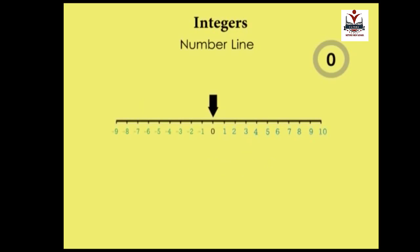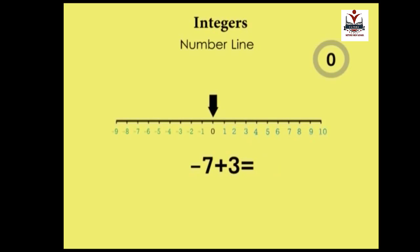Secondly, if two negative signs follow each other, they can be replaced with a single positive sign. So minus 7 minus minus 3 — which may also be written as minus 7 minus (minus 3) — becomes minus 7 plus 3. On the number line: seven steps left, then three steps right, gives us minus 4.